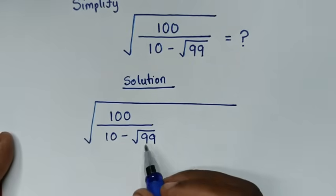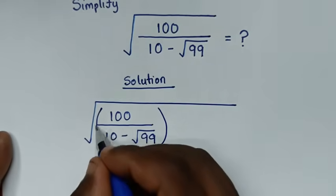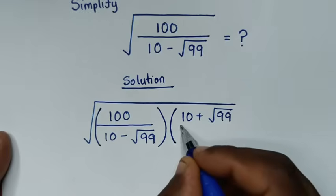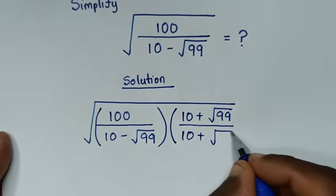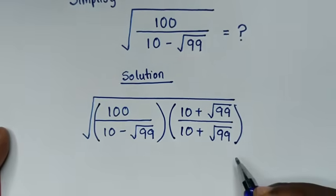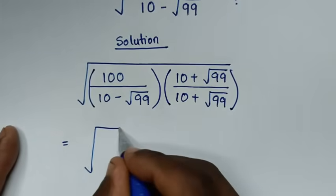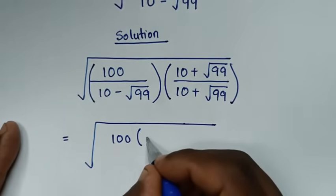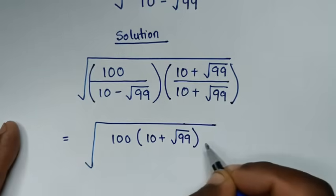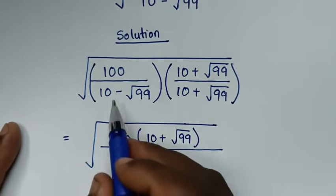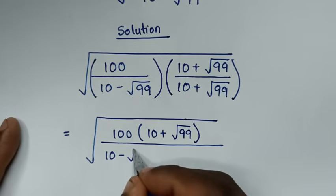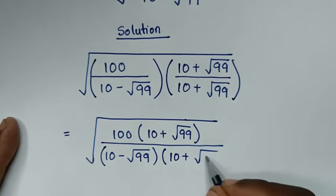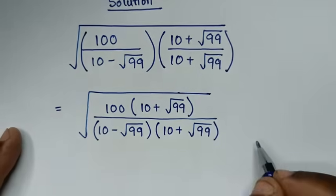In the first step, we'll rationalize the denominator. We multiply by (10 plus square root of 99) over (10 plus square root of 99). This gives us square root of 100 times (10 plus square root of 99), all over (10 minus square root of 99) times (10 plus square root of 99).